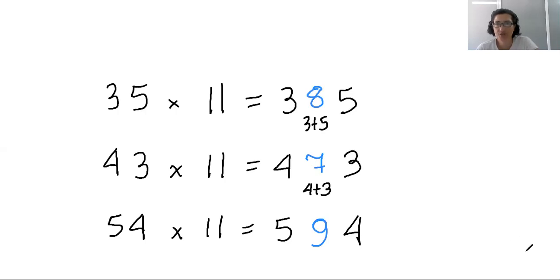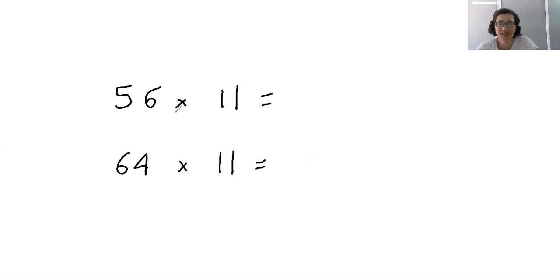So 56 times 11. We write 5 for the first digit, 6 for the last digit, and the sum of the two numbers is 11. So we write like this, 1 under the first digit. We can now erase this and say 5 plus 1 is 6. So our answer 56 times 11 makes 616.